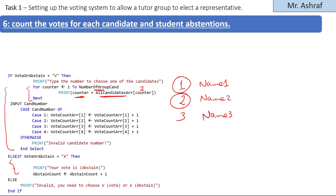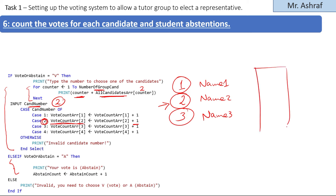I display each candidate's number alongside their name from the array so the user can make a selection. The user might then input, for example, two. We use a case statement, and in case of two, we increment the number of votes for that candidate and store it in the vote count array.